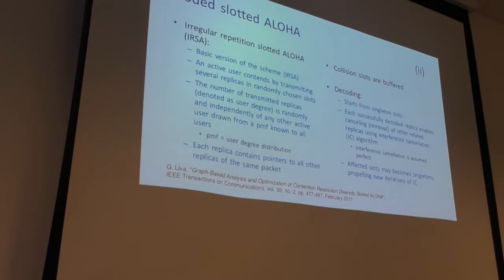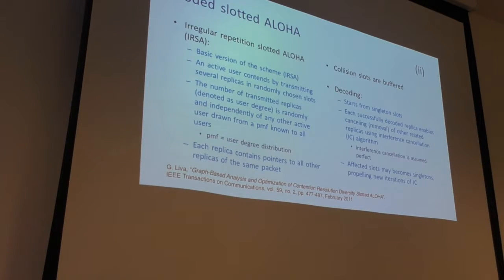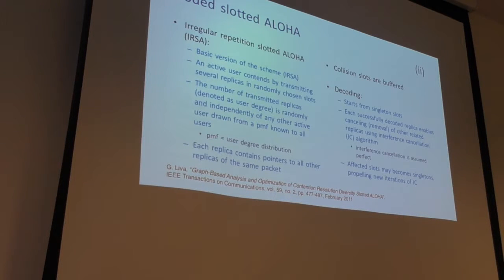For massive machine-type communication, this scheme is not directly applicable because it doesn't scale. However, if you are able to keep the collision size controlled statistically — say two or three collided users per slot — and if you can do channel estimation sufficiently well, then it would make sense. The number of slots must scale with the number of users, but if the collision size can be limited, interference cancellation remains feasible.